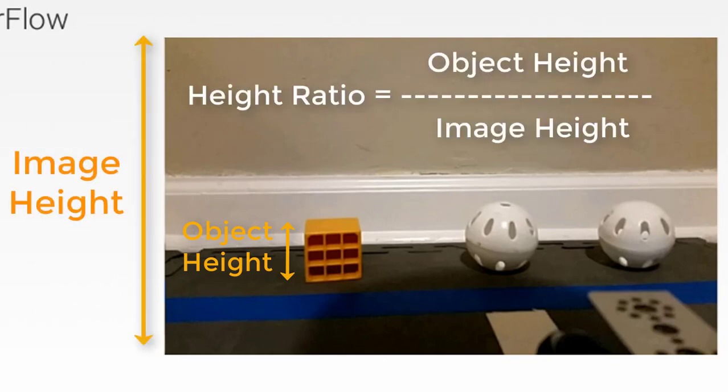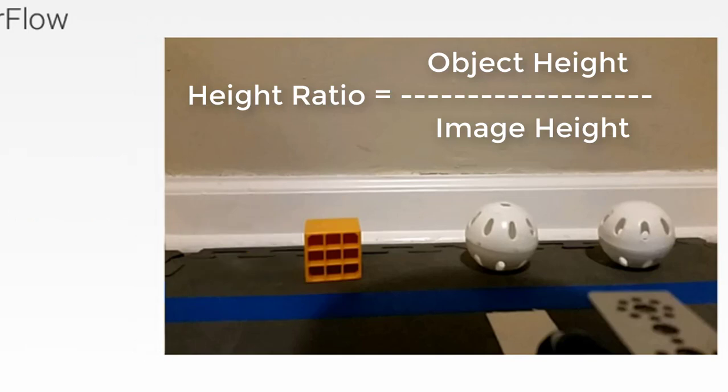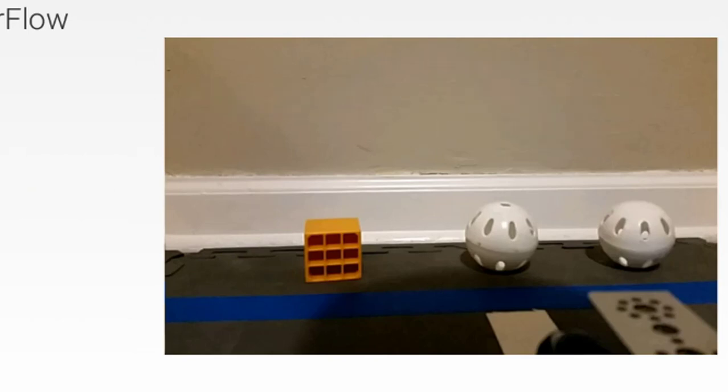A small ratio like 0.2 indicates that the gold mineral is still some distance away, while a ratio of 0.5 indicates the gold mineral is quite close. I chose to use the ratio of heights rather than widths because the width of a gold mineral will appear to be larger if it is turned at an angle relative to the robot.